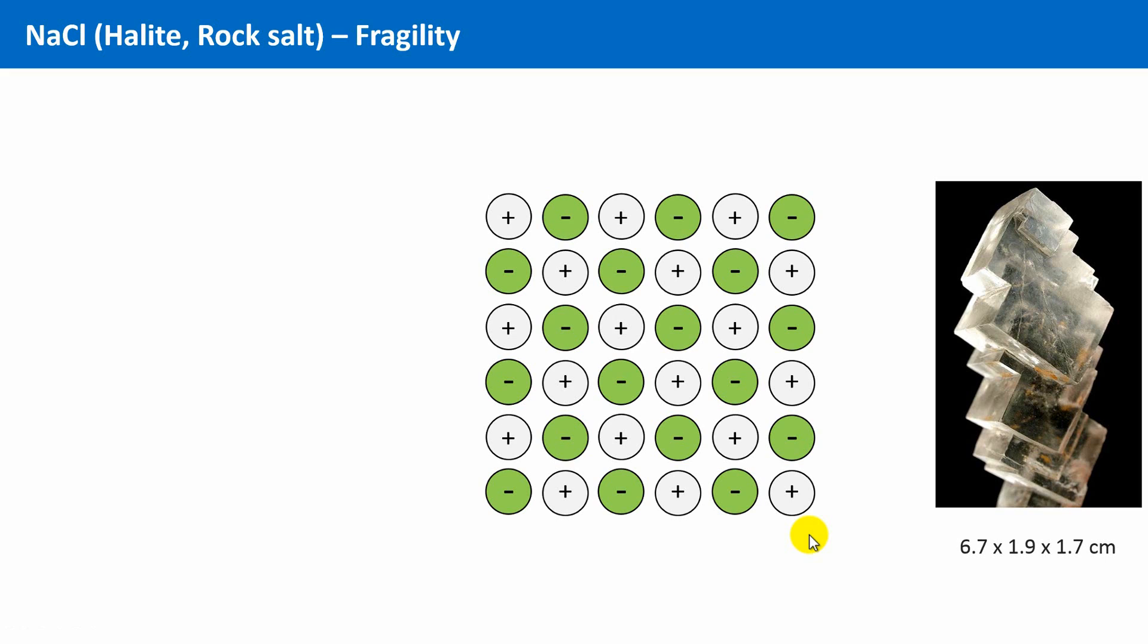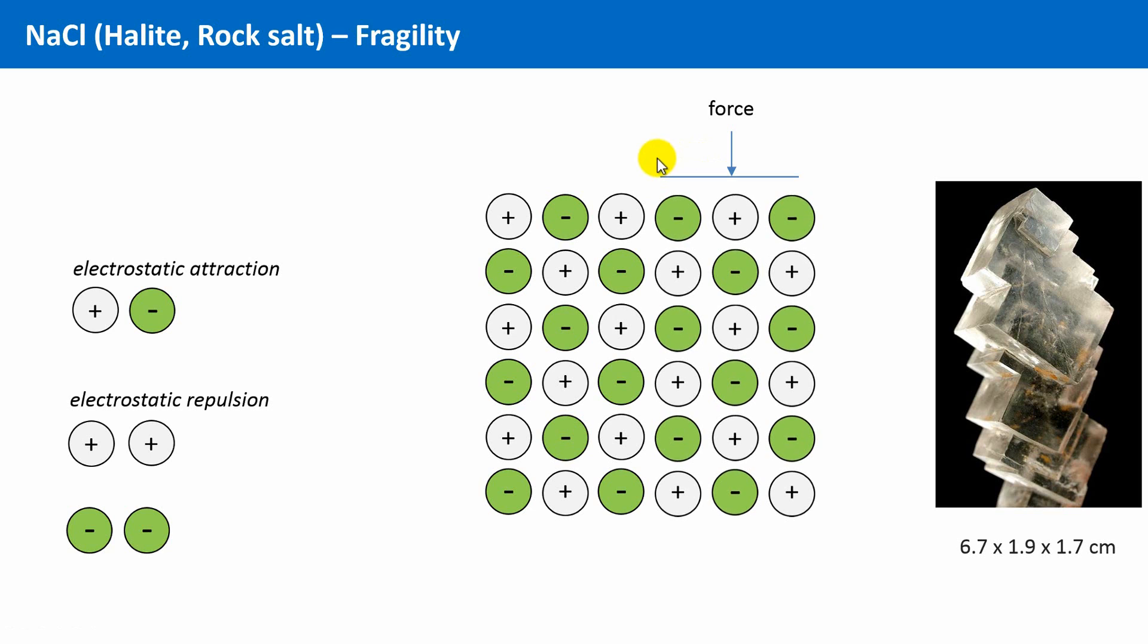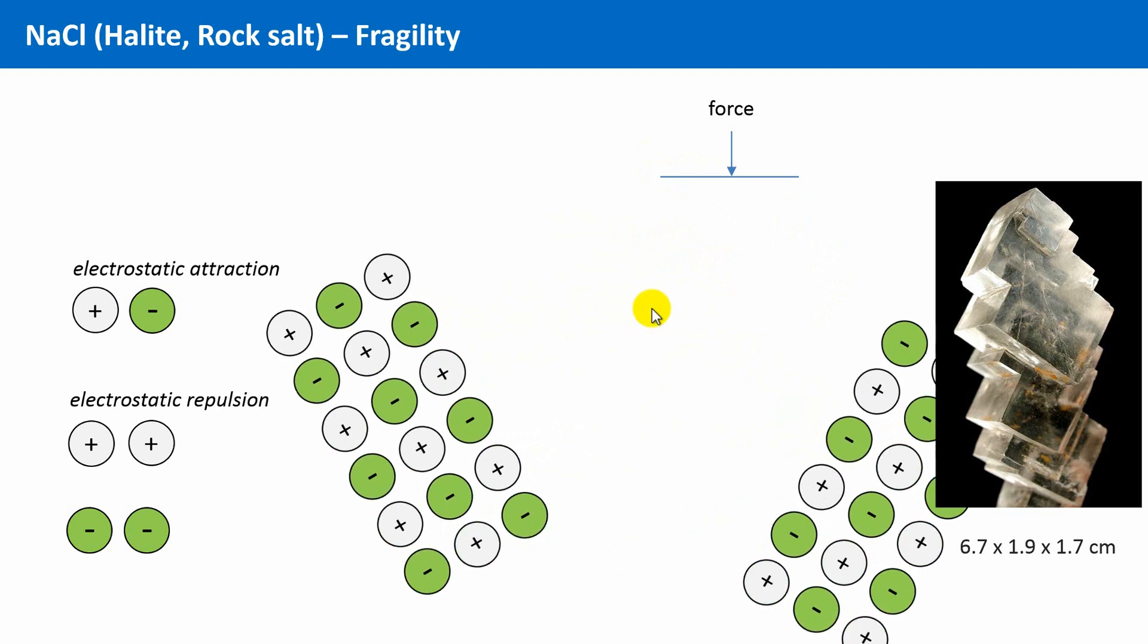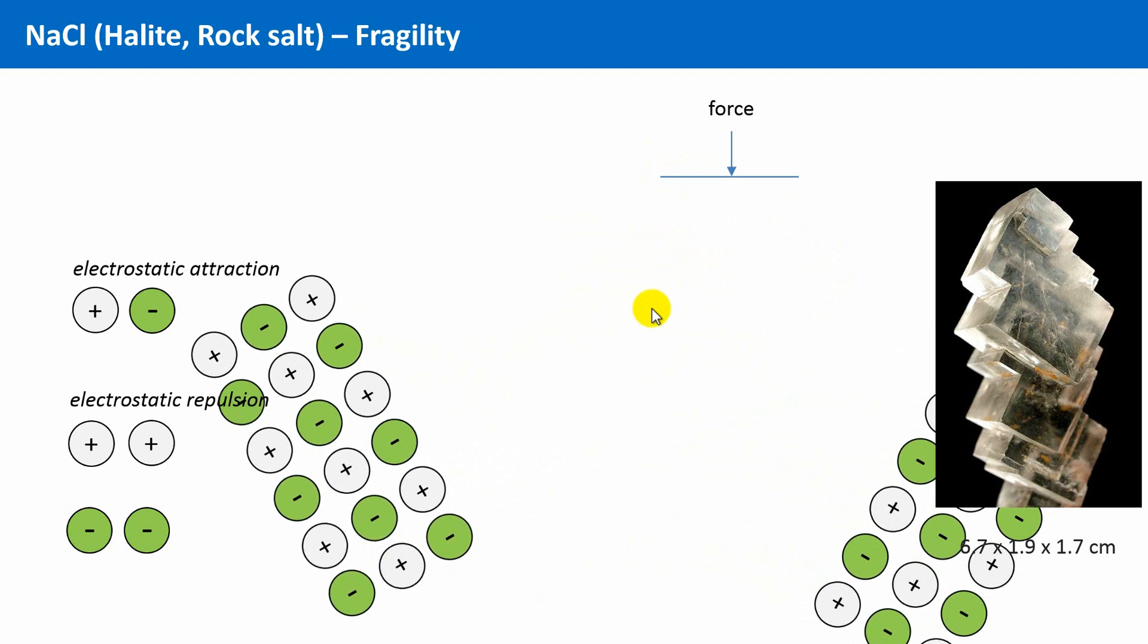And the reason for this property lies in the fact that it is an ionic compound. Although the electrostatic attraction between species of opposite charges are not small, we can see here in the following animation what will happen if we do exert a force on only one side of such a cube. It is likely that ions with same charges suddenly are right next to each other. And these will repel each other, resulting in a fracture. These two parts will fall apart.